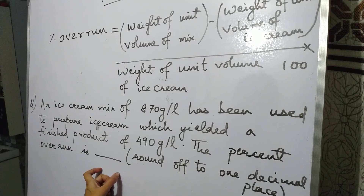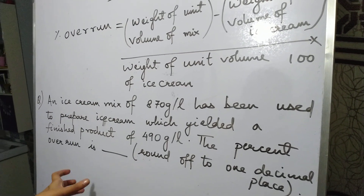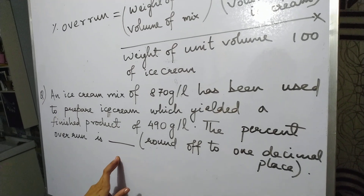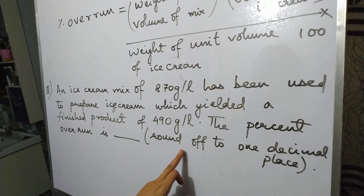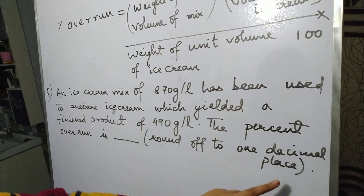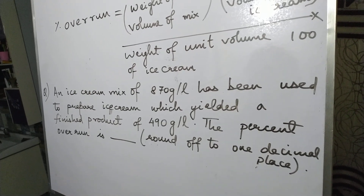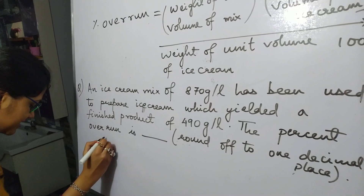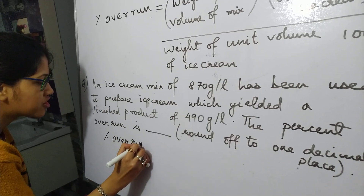Since this is a NAT question, there is no negative marking. So you can easily solve the question and be sure that if your answer is correct you will get full marks. The question says to round off to one decimal place, meaning after the decimal you consider a single digit only. Be careful about these instructions in the GATE exam. You should always try to answer NAT type questions because there is no negative marking.